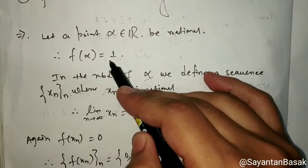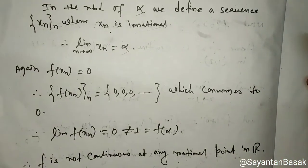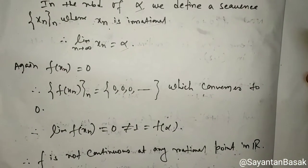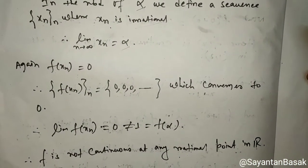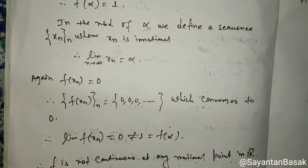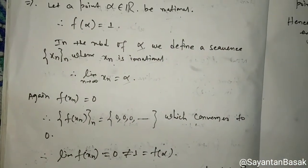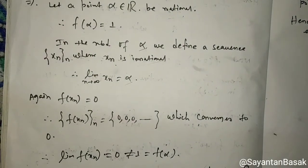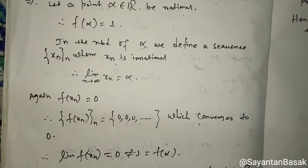Since the limit of f(x_n) equals 0, which is not equal to f(alpha) equals 1, we conclude that f is not continuous at any rational point in R.